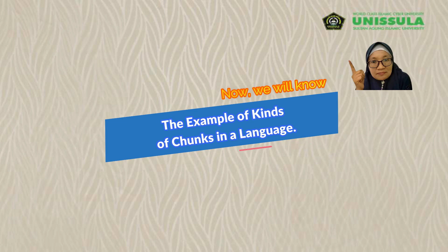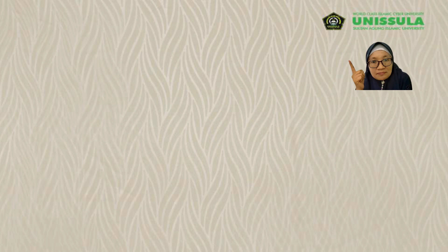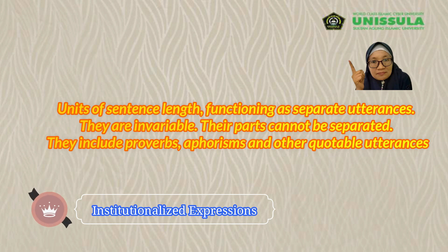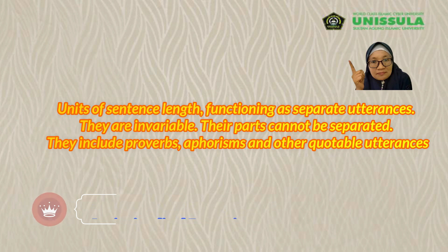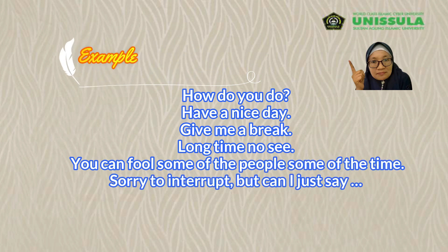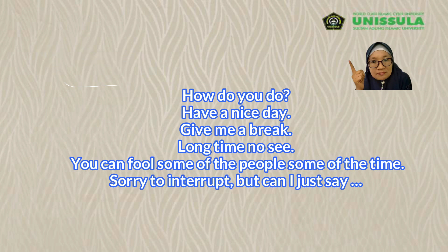Now we will look at examples of kinds of chunks in language. First, institutionalized expressions. An institutionalized expression is a unique sentence-length unit functioning as a separate occurrence. They are inseparable — their parts cannot be separated. They include proverbs, aphorisms, and other quotable utterances. Examples include: 'How do you do?', 'Have a nice day.', 'Give me a break.', 'Long time no see.', 'You can fool some of the people some of the time.', and 'Sorry to interrupt, but can I just say...'